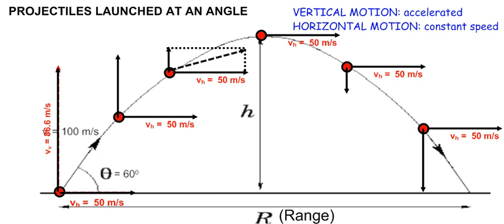The horizontal velocity is easy to find because it always remains the same as at projection. The vertical velocity component can be found by utilizing the kinematics equations for vertical motion. For example, if we launch a projectile at an upward velocity of 86.6 m per second, it will take a particular time to reach maximum height and will also travel a particular maximum height.